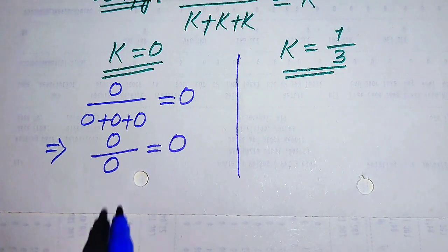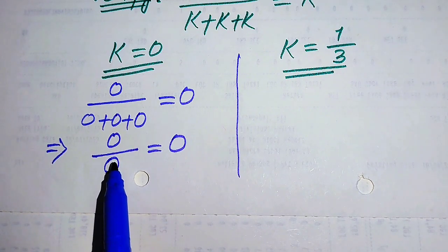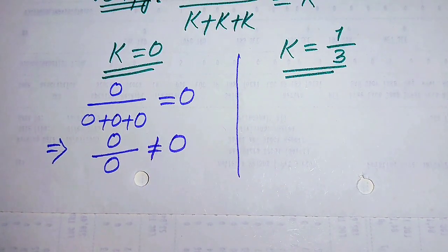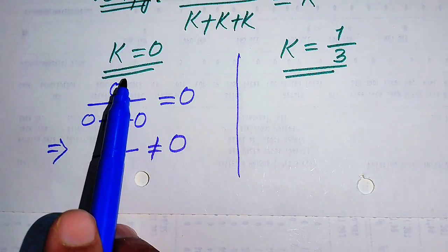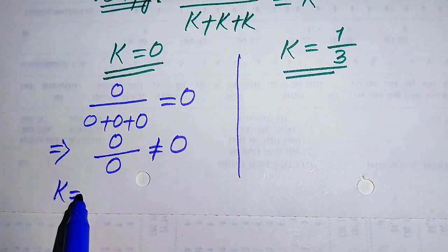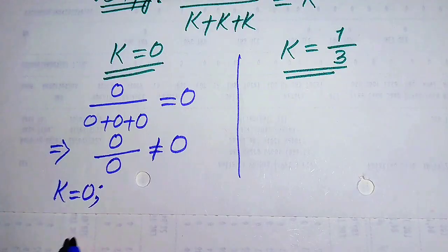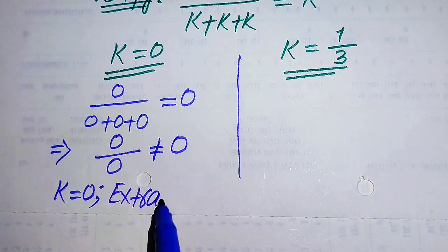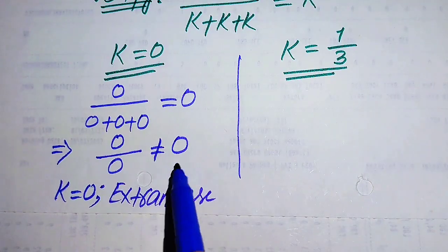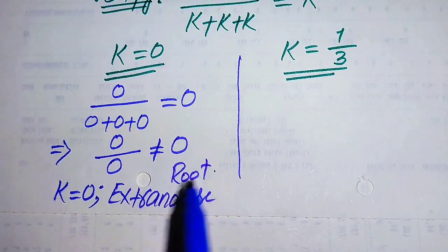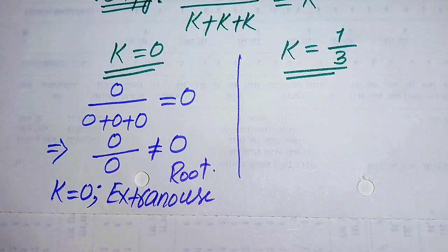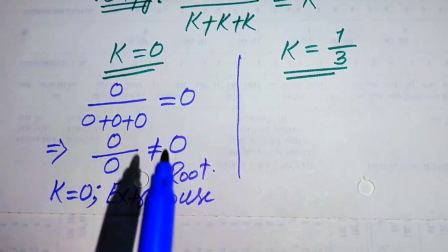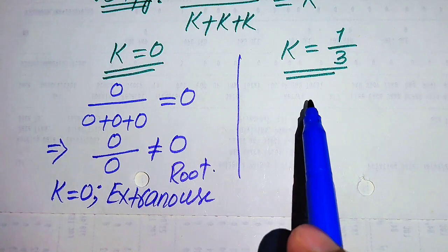Since 0 over 0 is undefined, both sides are not equal. Therefore k equals 0 does not satisfy the given equation, so we conclude that k equals 0 is an extraneous root. Now we verify the second value k equals 1 over 3.